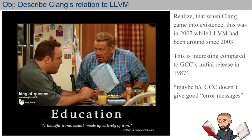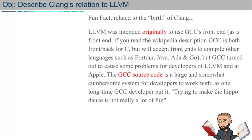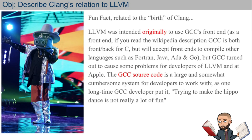GCC is known for not giving good error messages — so GCC maybe has communication trouble. A fun fact related to the birth of Clang: LLVM was originally intended to use GCC as its front end. Apparently GCC is both a front end and back end for the C programming language, but it will accept other front ends to compile other languages like Fortran, Java, Ada, or Go.